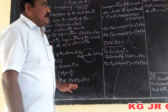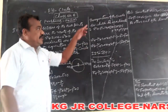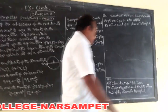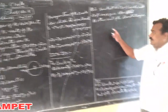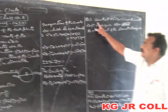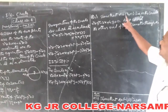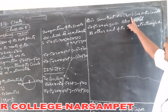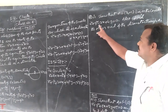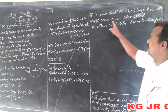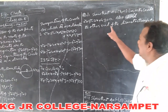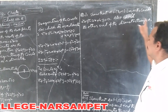Now I am explaining the second problem. Students, observe this: show that A = (3, −1) lies on the circle x² + y² − 2x + 4y = 0, and also find the other end of the diameter passing through A.